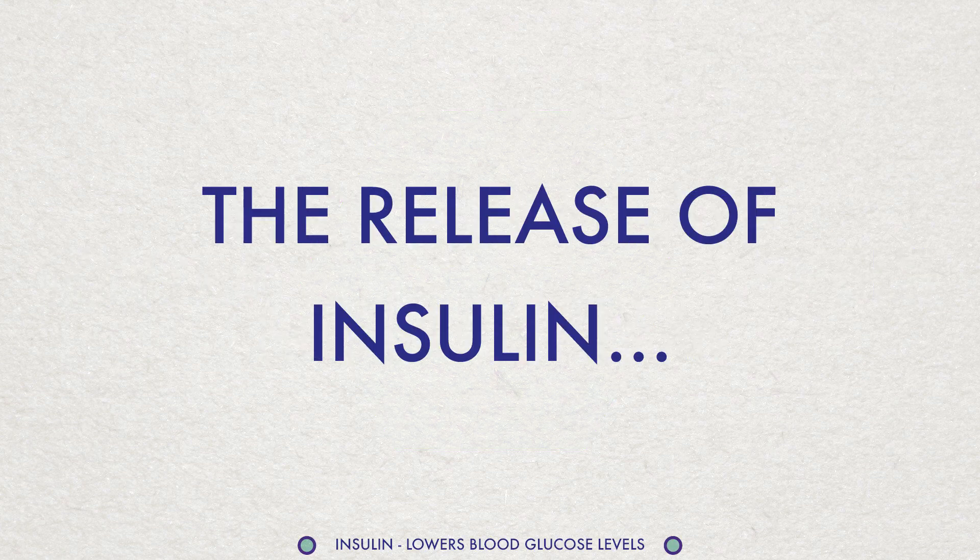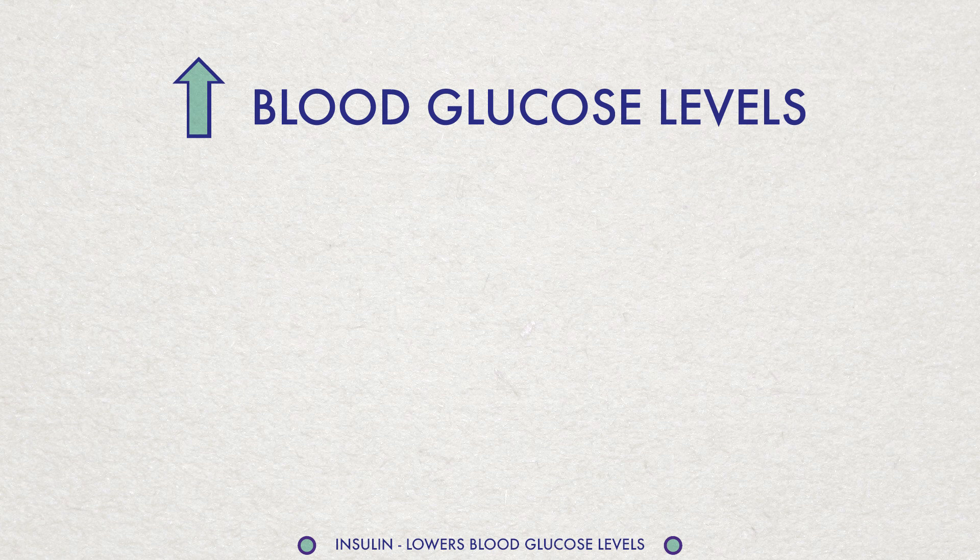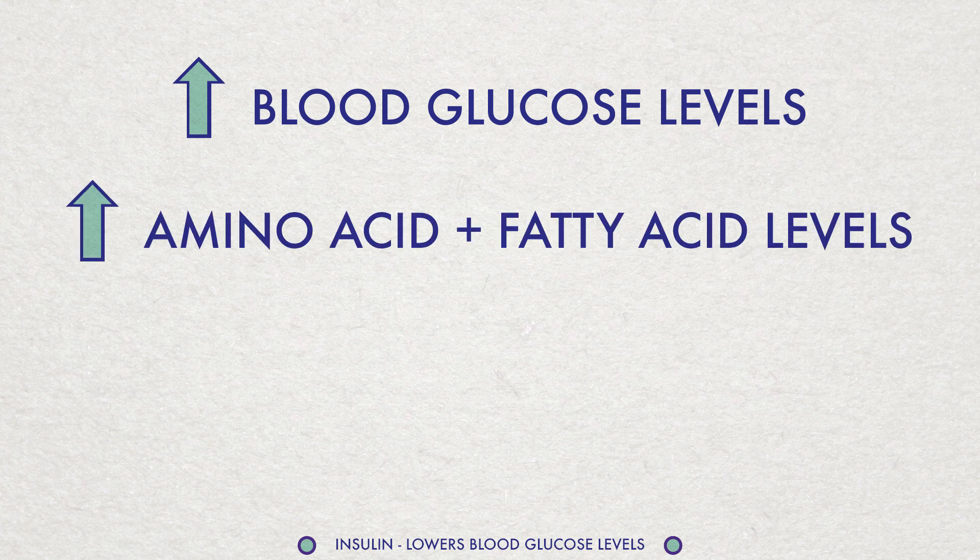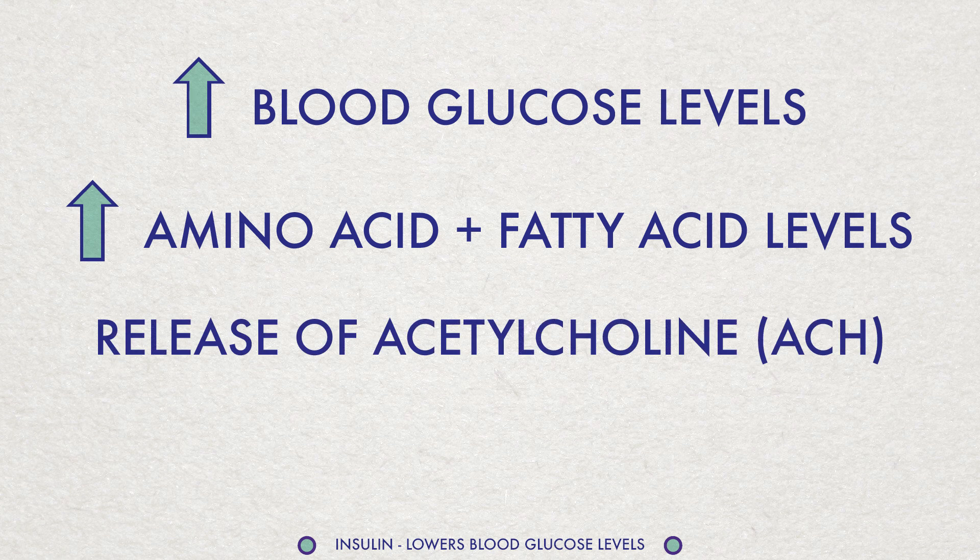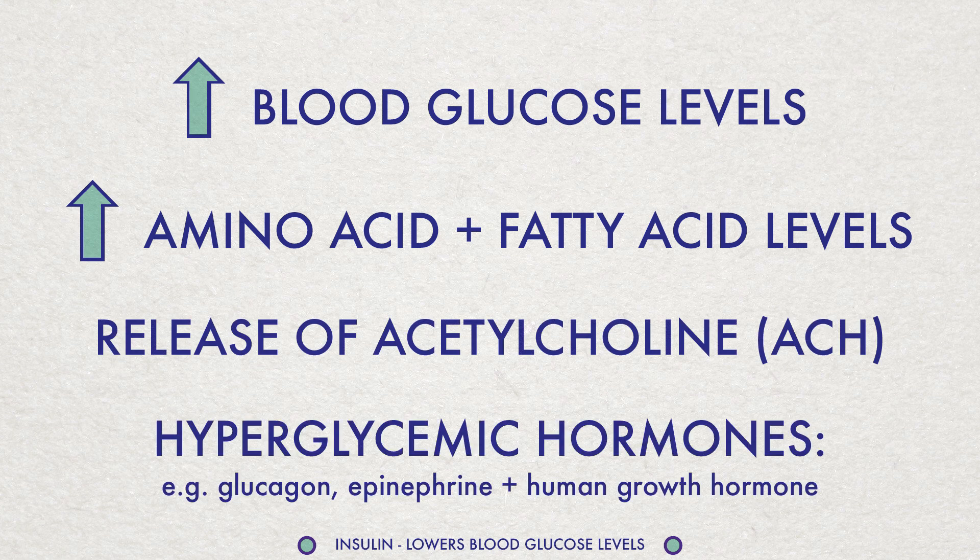The release of insulin is triggered by elevated blood glucose levels, rising blood levels of amino acids and fatty acids, the release of ACH, and finally, by hyperglycemic hormones.